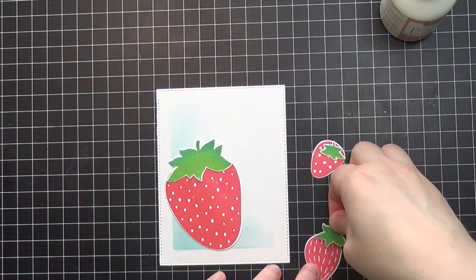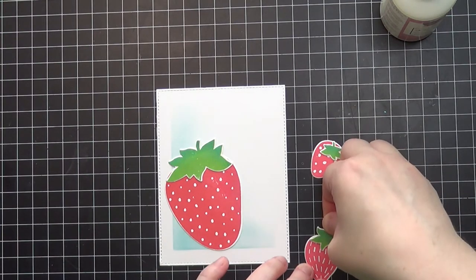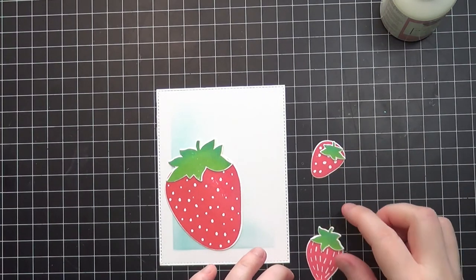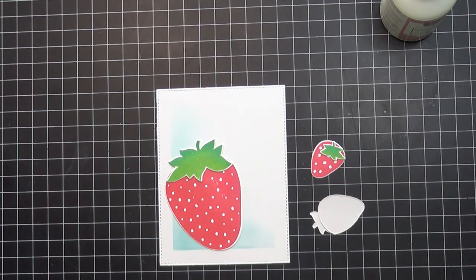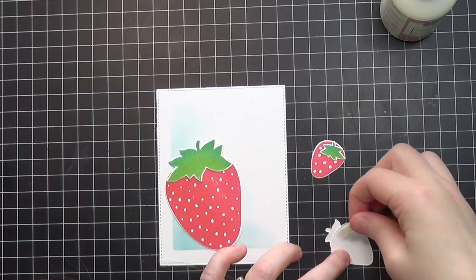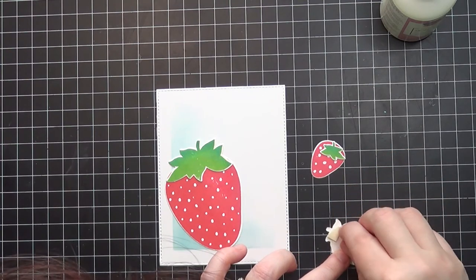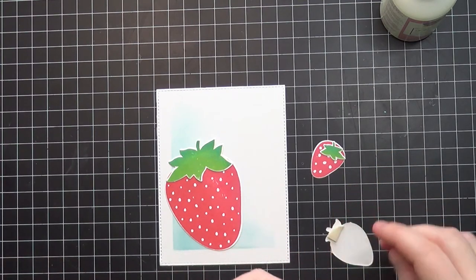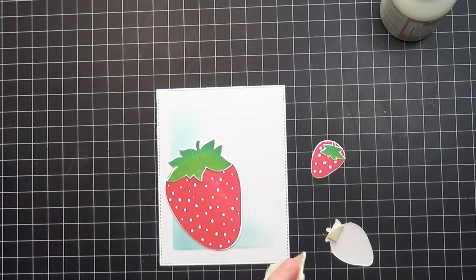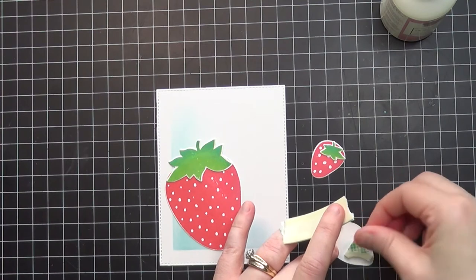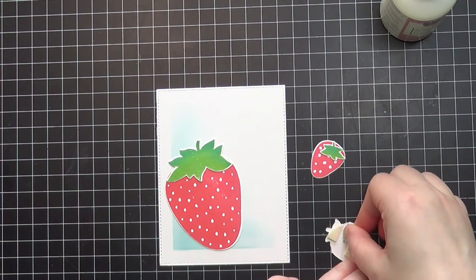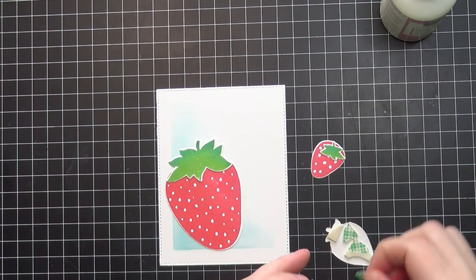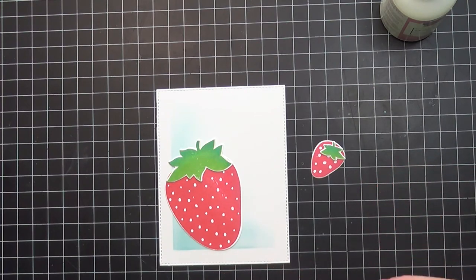I'm using my liquid glue to add the tops of the strawberries, and then I'm adding foam adhesive to this middle strawberry. I've got the largest, then a medium size, and a smaller size strawberry. I like the different sizes, especially on a clean and simple card like this - it gives a little bit of variety.